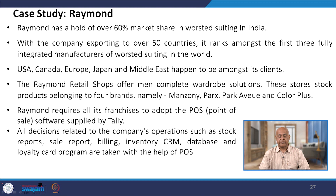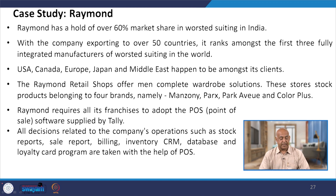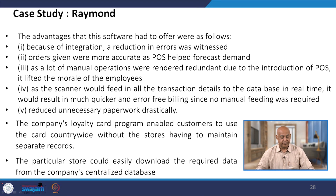Raymond retail shops offer men complete wardrobe solutions, stocking products under four brands: Manzoni, Park Avenue, and Keller Plus. Raymond requires all its franchises to adopt point-of-sale software. All decisions related to the company's operations — such as stock reports, sales reports, billing, inventory, CRM database, and loyalty card programs — are taken with the help of POS.